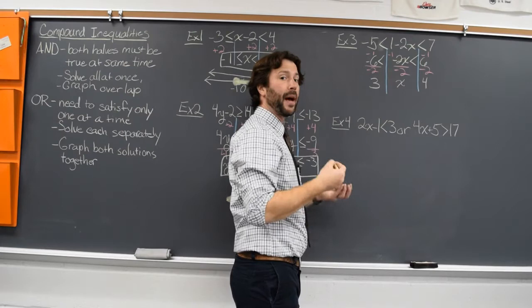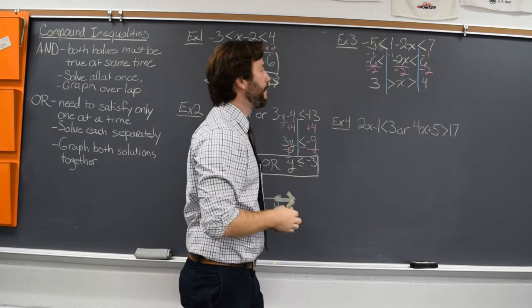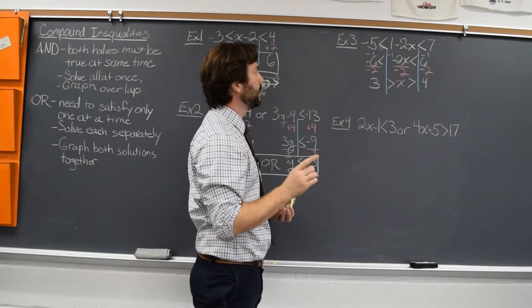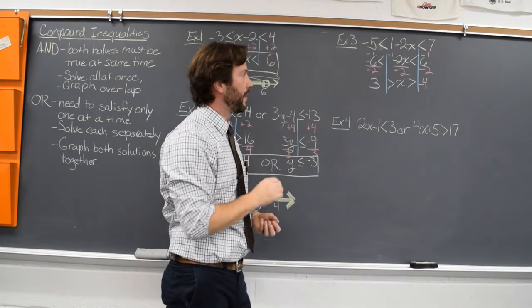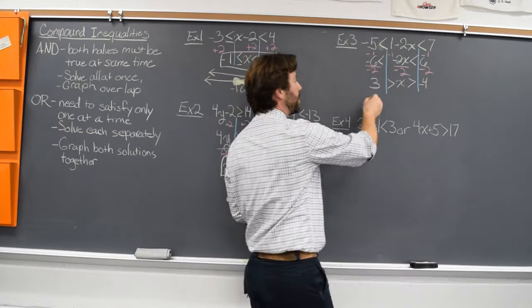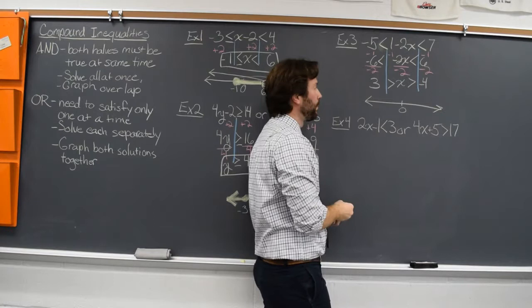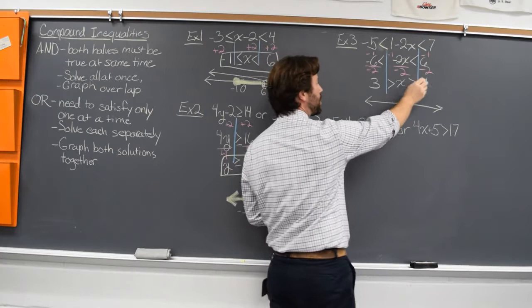The catch is we divided all three sides by a negative, so we need to reverse those inequalities. So we have three is greater than x is greater than negative four — wait, let me correct that: when we divide by a negative, that four should also be negative. Now we have our solution. We'd like to graph it, so we'll set up the number line. Put zero somewhere near the center, and we graph each half very lightly and darken where they overlap.